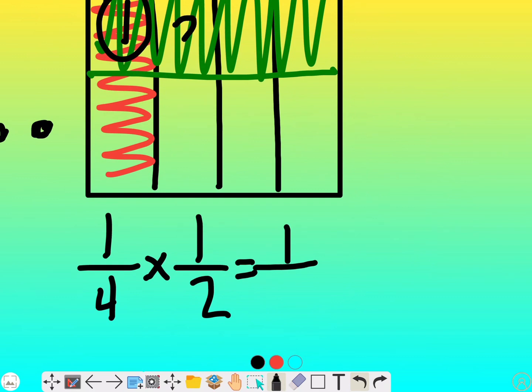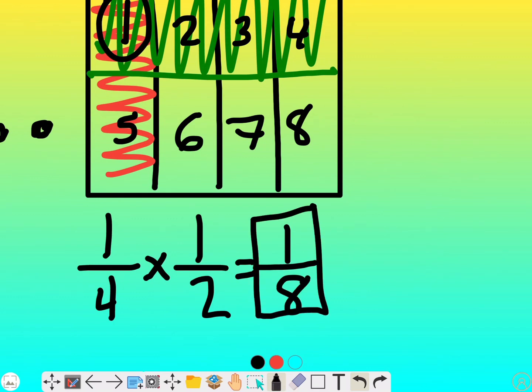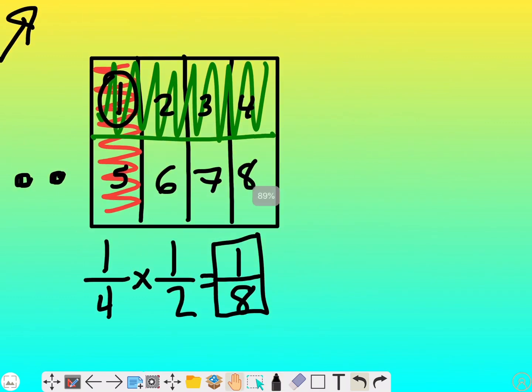And I have one box that has both colors in it. And I have one, two, three, four, five, six, seven, eight boxes in all. So my problem for one fourth of one half, the answer is one eighth.